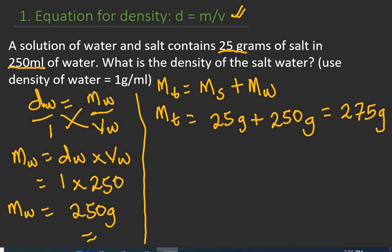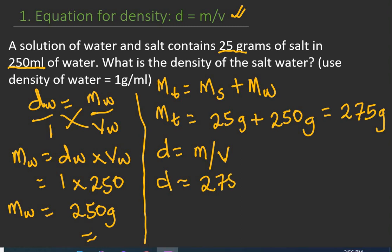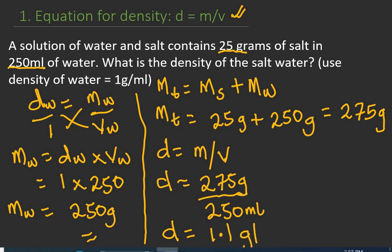The volume of the salt water is 250 milliliters. Now let's plug our values into the density formula: density equals mass over volume. Density equals 275 grams divided by 250 milliliters, which gives us 1.1 grams per milliliter.